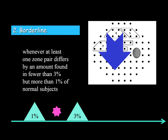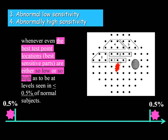'Borderline' is written when the difference between one zone up and down is found in one to three percent of the population. 'Abnormally low' or 'abnormally high sensitivity' is written based on the best sensitive point of all measured values. If this best value occurs in only the top half percent of the normal population, it is written as 'abnormally high.' If it occurs in only the bottom half percent, it is written as 'abnormally low.'